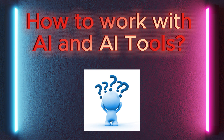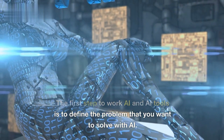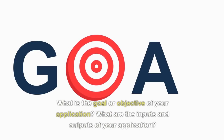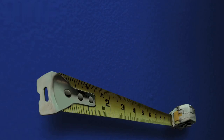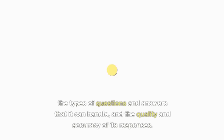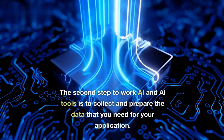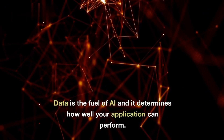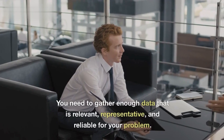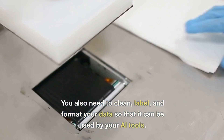Now we're going to talk about how to work with AI and AI tools. Step 1: Define the problem. The first step is to define the problem that you want to solve with AI — what is the goal or objective of your application, what are the inputs and outputs, and what are the metrics to measure success. For example, if you want to create a chatbot that can answer customer queries, you need to define the scope and purpose of your chatbot, the types of questions and answers it can handle, and the quality and accuracy of its responses. Step 2: Collect and prepare the data. Data is the fuel of AI and determines how well your application can perform. You need to gather enough data that is relevant, representative, and reliable, and also clean, label, and format your data so it can be used by your AI tools.